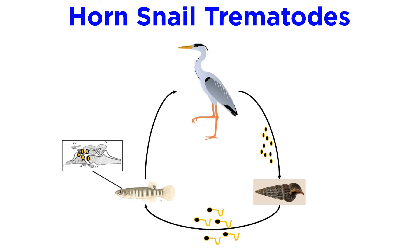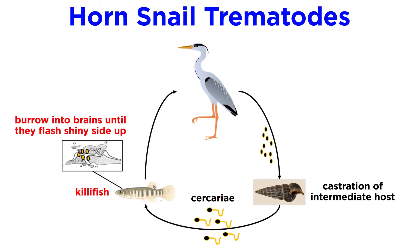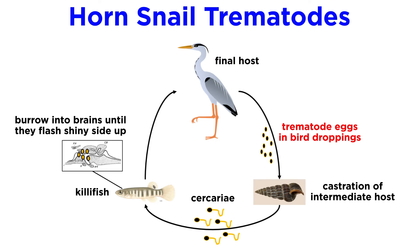Other species of horned snail trematodes castrate their intermediate hosts and use their bodies to reproduce, eventually releasing cercariae that burrow into the brains of killifish, forcing them to flash their shiny sides upward to attract their final host — a predatory bird — where they reproduce and begin the cycle anew.